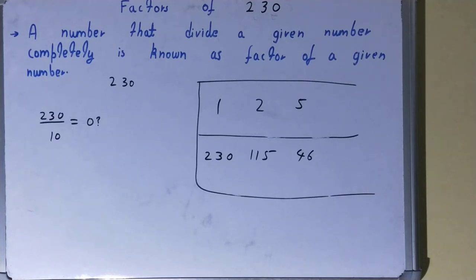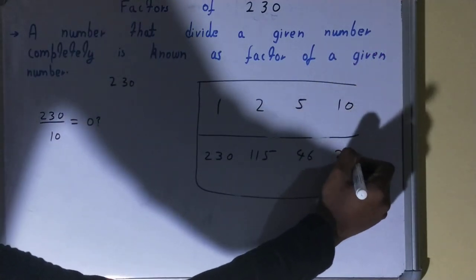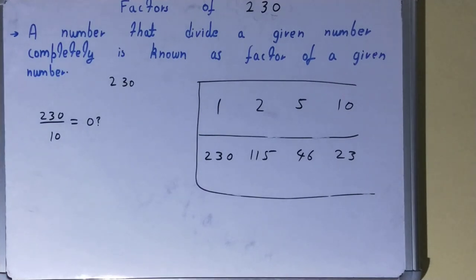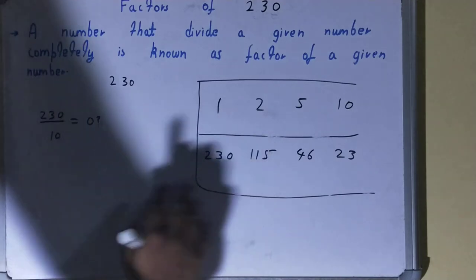10, 23 times. So 10 is a factor, and 10 into what times? 10 into 23 times. So 23 will also be the factor. Now one thing you need to see very carefully over here, that in the second row,